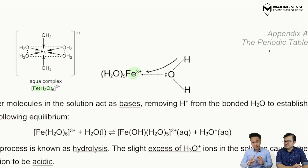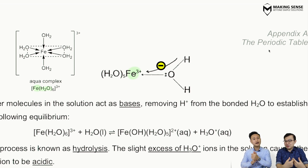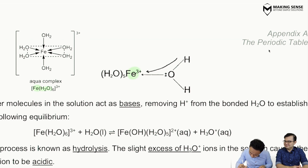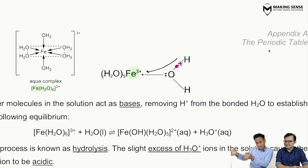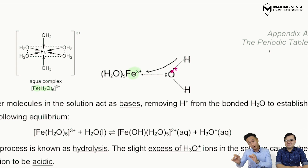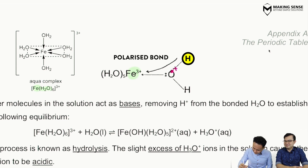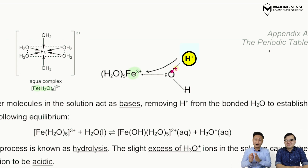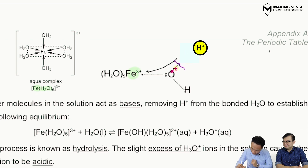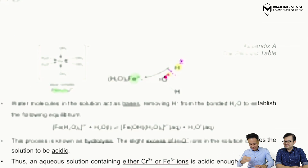Because Fe3+ has a high charge density, it loves to pull electrons toward itself. Focus on the electrons in the O–H bond in one of the water molecules: the high charge density pulls and polarizes those electrons toward the metal ion. This polarizes the O–H bond, so the hydrogen essentially loses its electron and becomes like H+. Because the O–H bond is now polarized, it is very easy for it to break and release H+. This is how transition metal ions produce acidic solutions.